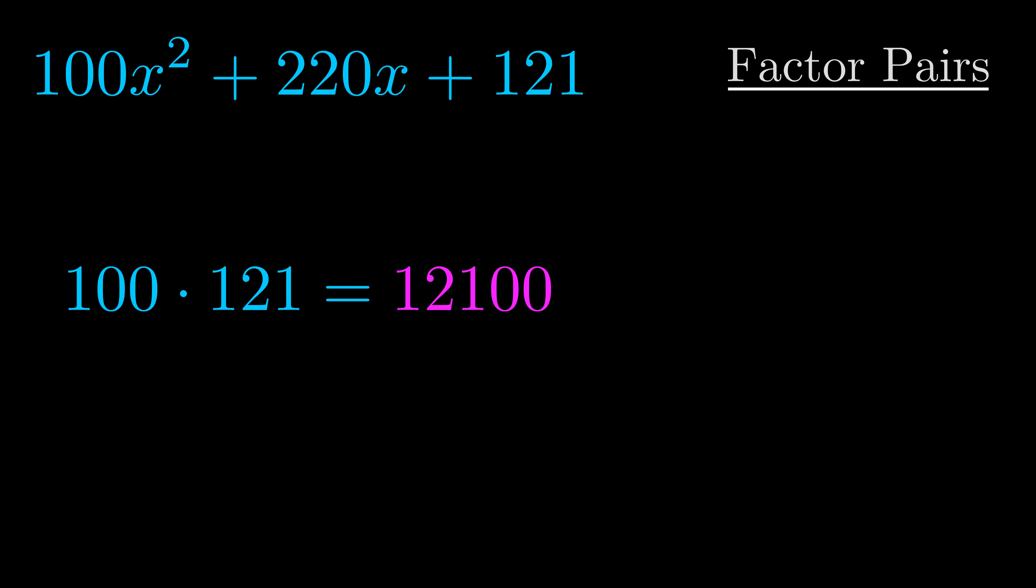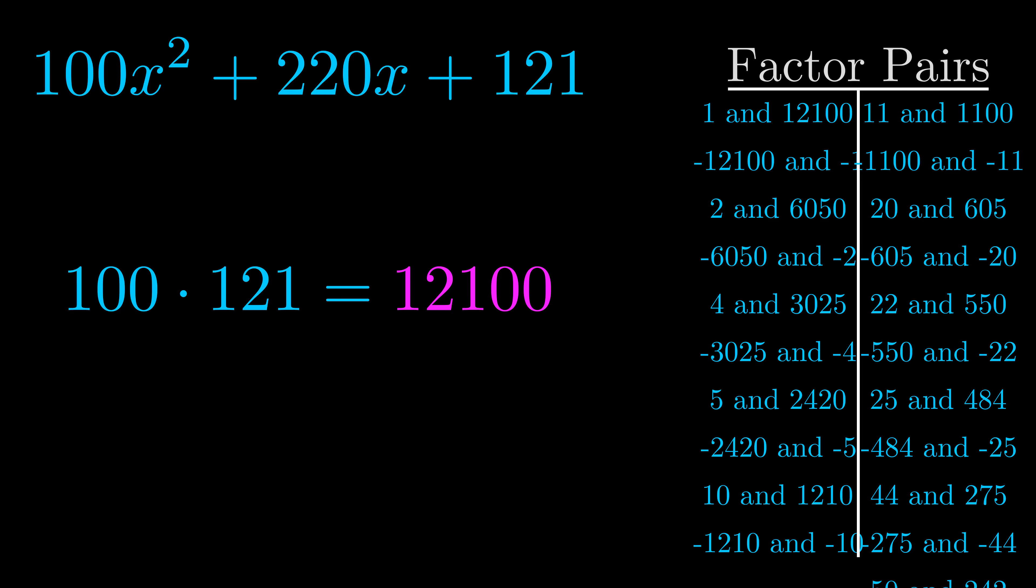Okay here's what I came up with. Now once you have these factor pairs the goal is to find which of these pairs adds to the b value.